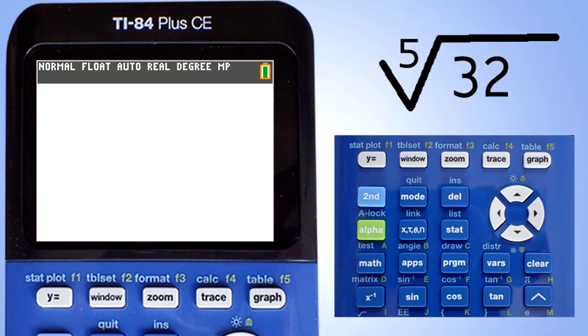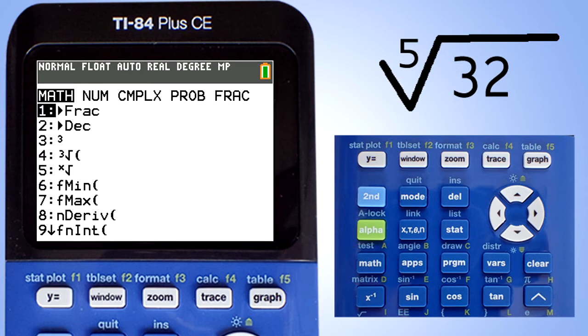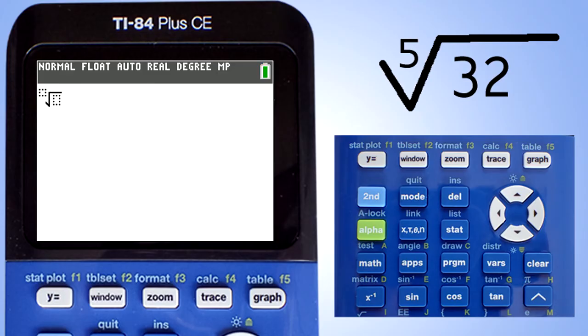In this problem we take the fifth root of 32. Press the math button. This window appears. Go down to number 5 and press the enter key. This window appears. Enter a 5.